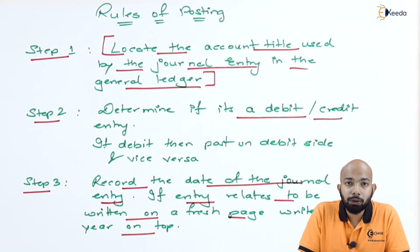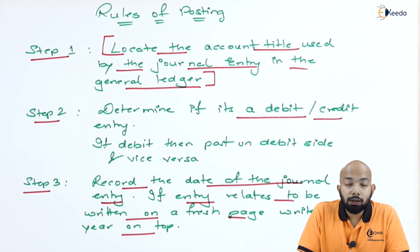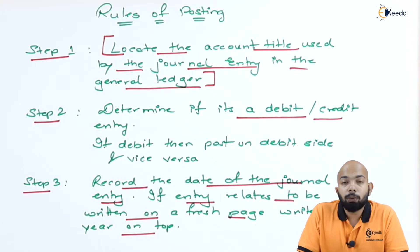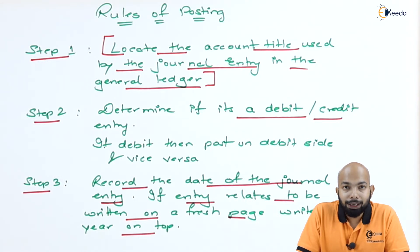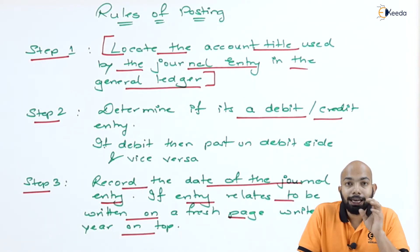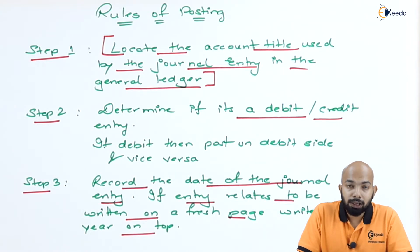Step three is to figure out the date of the transaction. Be very specific about the year. If it relates to the first entry, you have to mention the year on the top of the date column, both on the debit and credit side. If there is a change of year, you have to mention that year again. Similarly, if you go on to a fresh page, it is better to have the year on the top left corner of both the debit and credit side of the T account, to ensure alignment and avoid confusion.